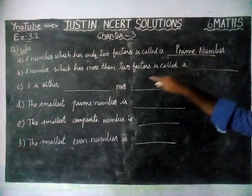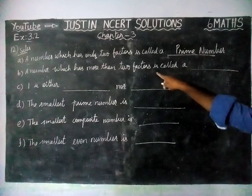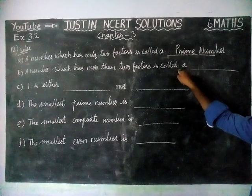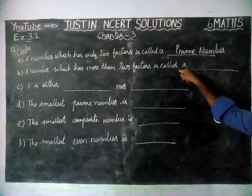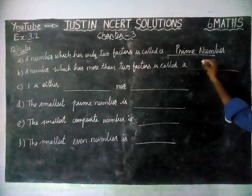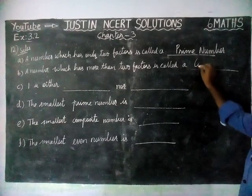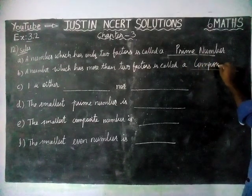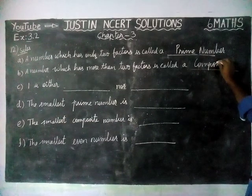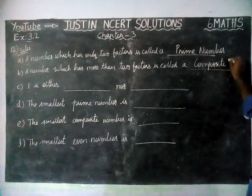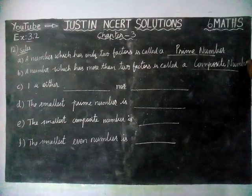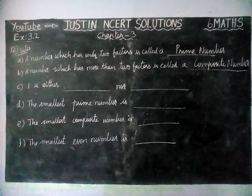And then, a number which has more than two factors is called a composite number.